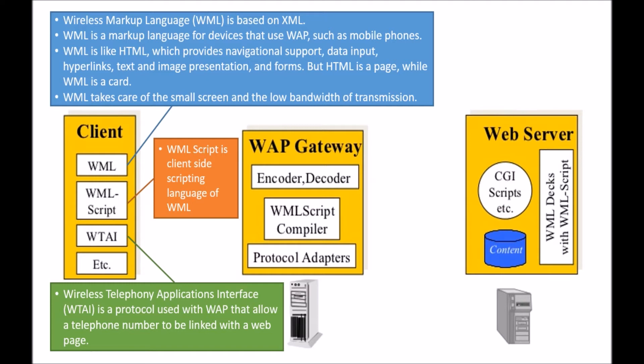Next is the WAP gateway. Its first component is the encoder and decoder, which is used to encode and decode messages. The next component is the WML Script compiler, which compiles the WML script, and then there are the protocol adapters.